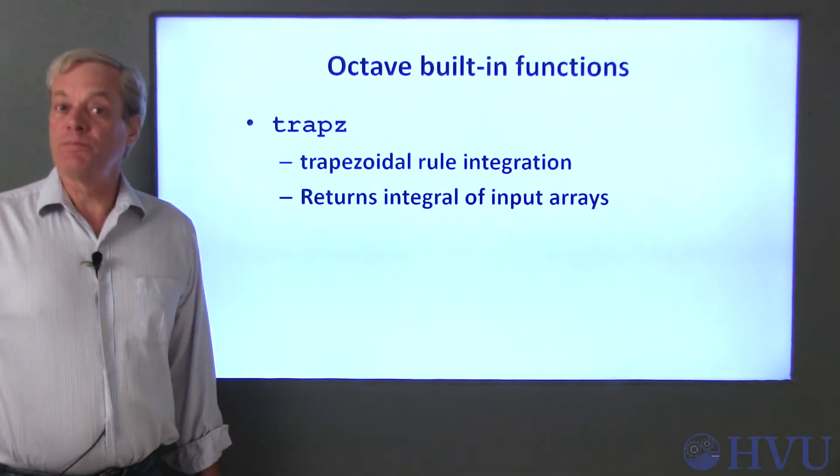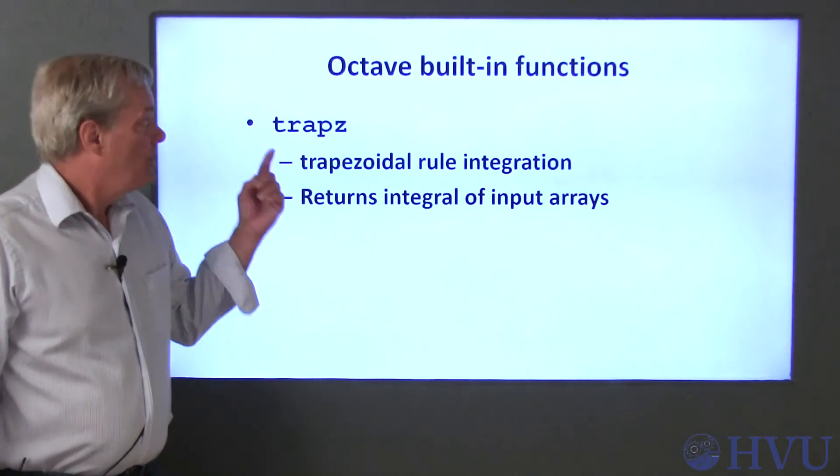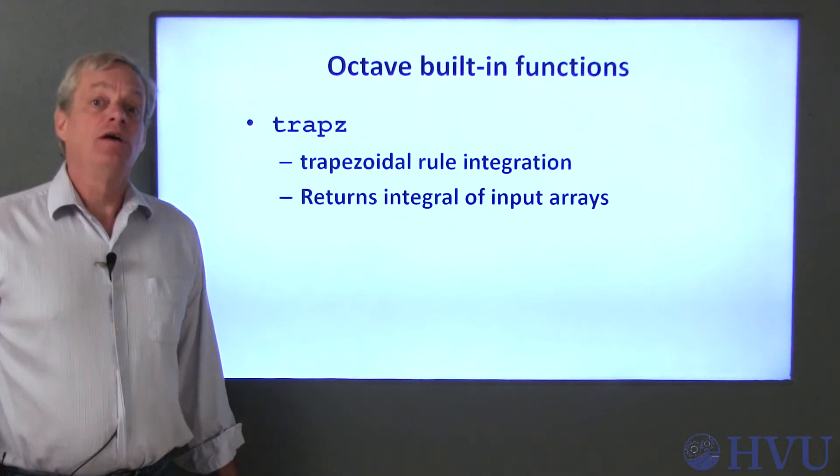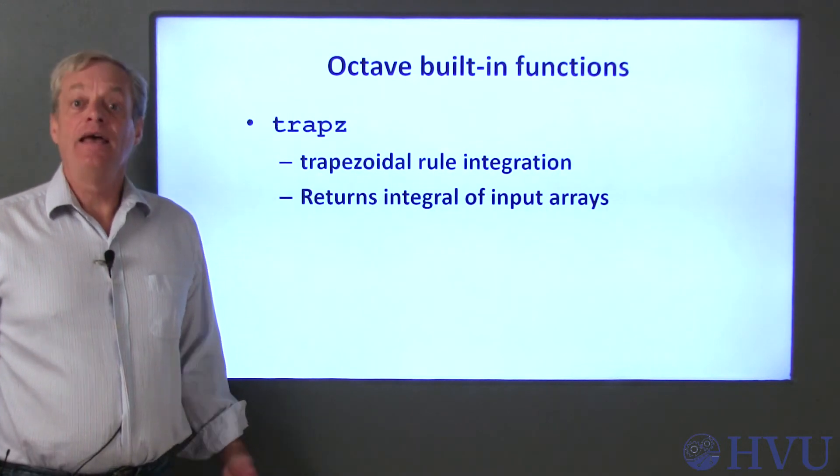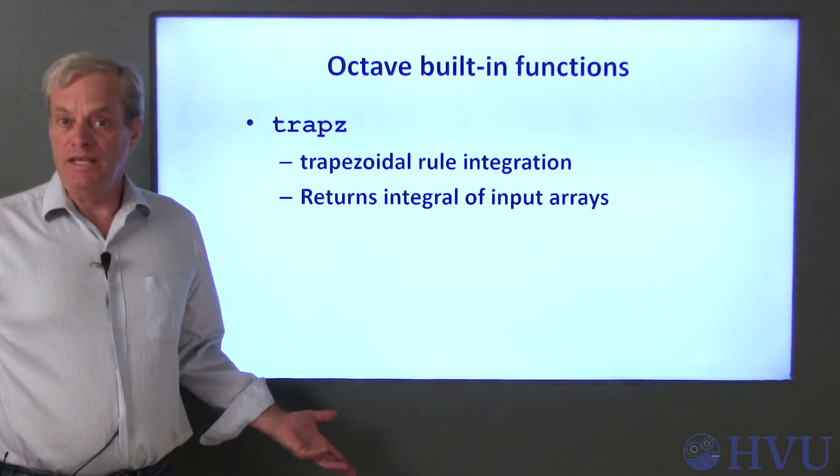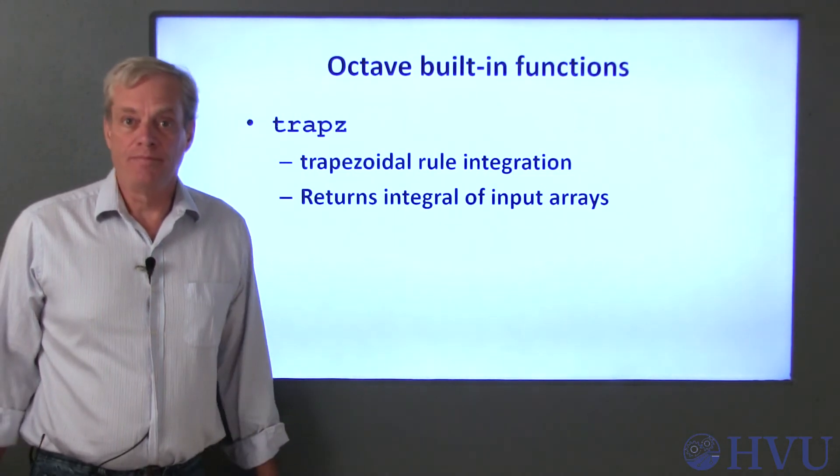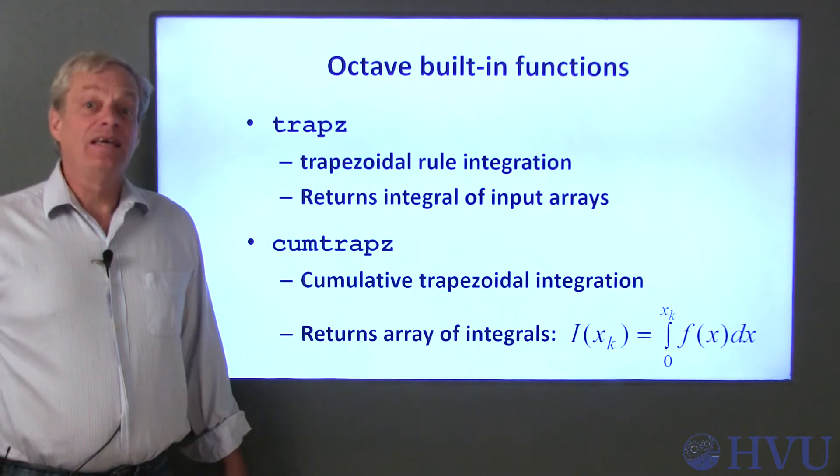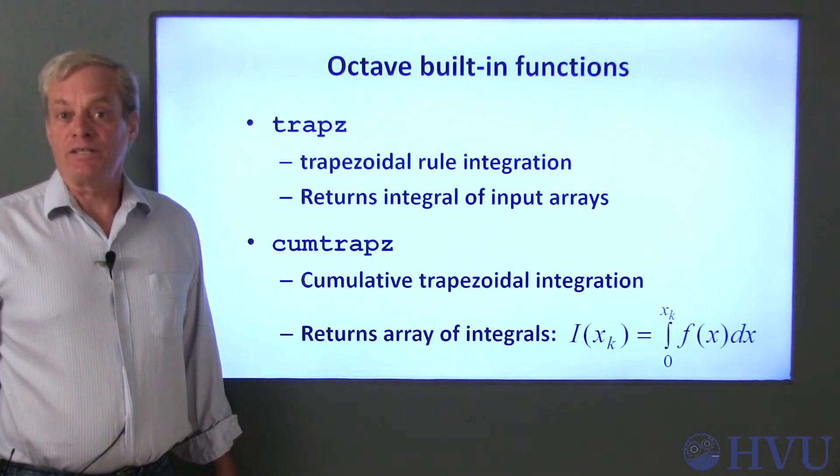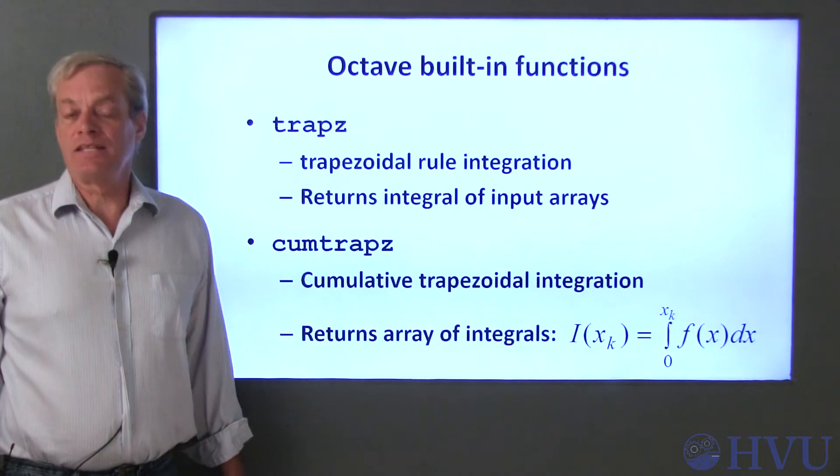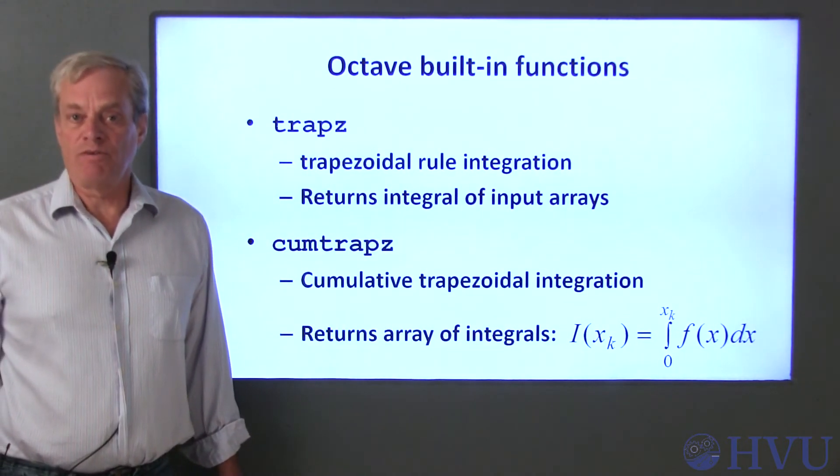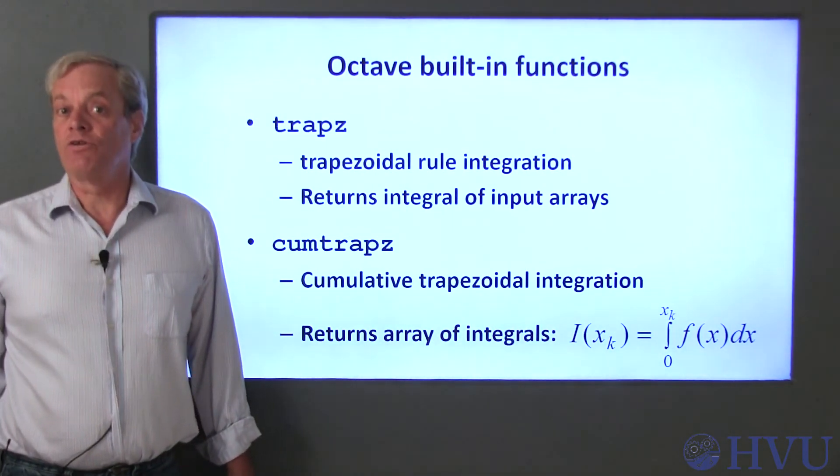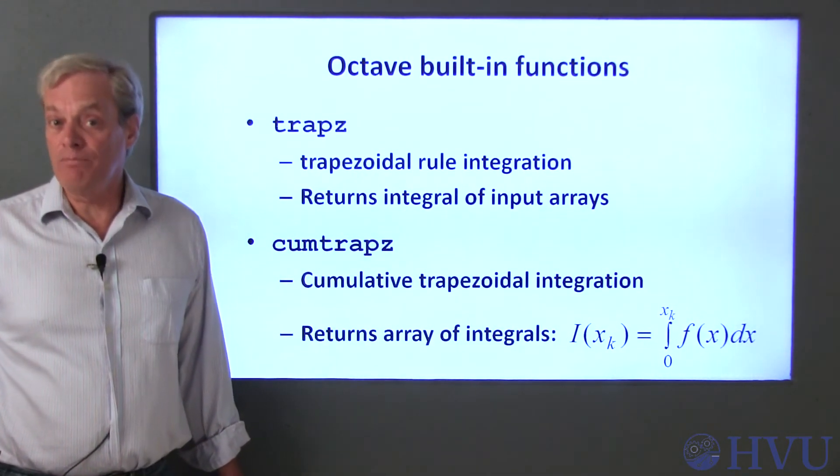There are a couple of octave functions that perform trapezoidal integration. TRAPZ works pretty much exactly like the function I created in the demonstration. You send in arrays containing X and Y data, and it returns a number which is the integral of the Y data based on the trapezoidal rule. QMTRAPZ performs a cumulative trapezoidal integration. It also accepts as inputs arrays of X and Y data, but it returns an array instead of the single number that TRAPZ provides. The kth element of the output array contains the accumulated integral between the first to the kth element of the input arrays.